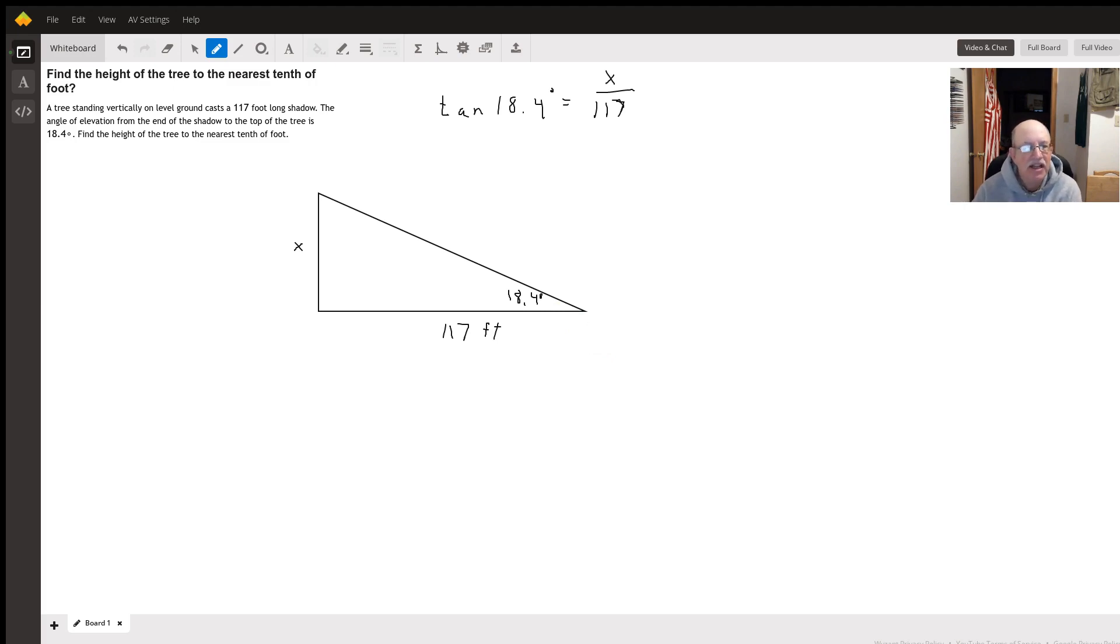The shadow is 117 feet long. So x is the opposite side from our 18.4 degree angle, and 117 is the adjacent side. That tells us to use tangent.